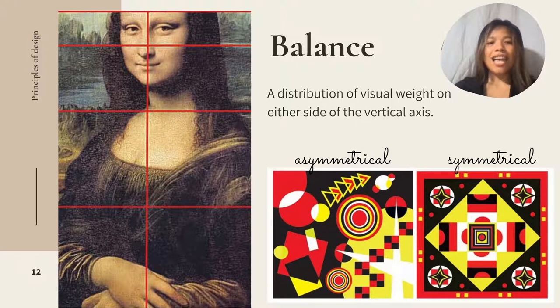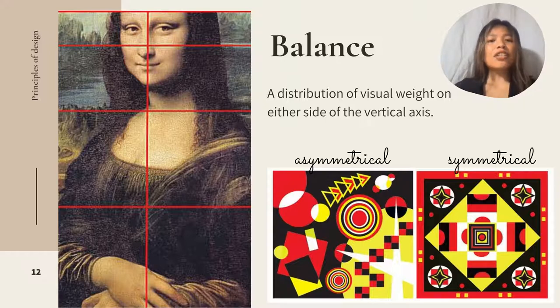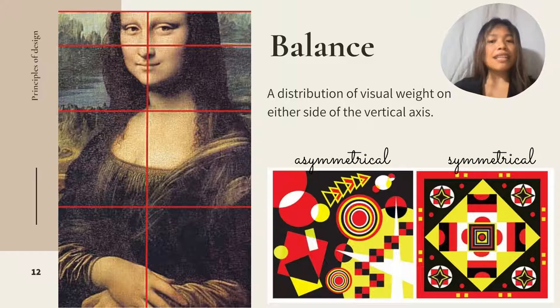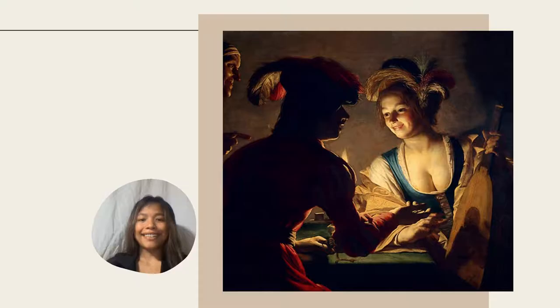First is Balance. A distribution of visual weight on either side of the vertical axis. Symmetrical balance uses the same characteristics. Asymmetrical balance uses different but equally weighted features.